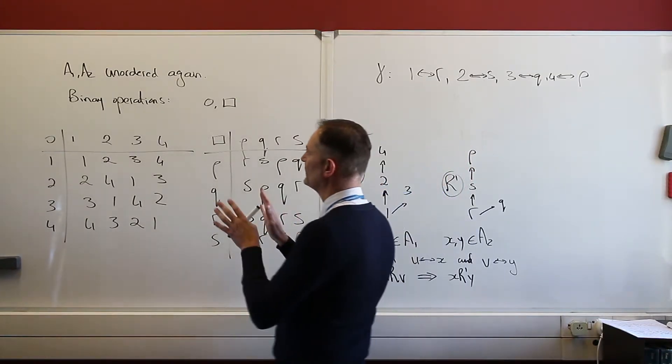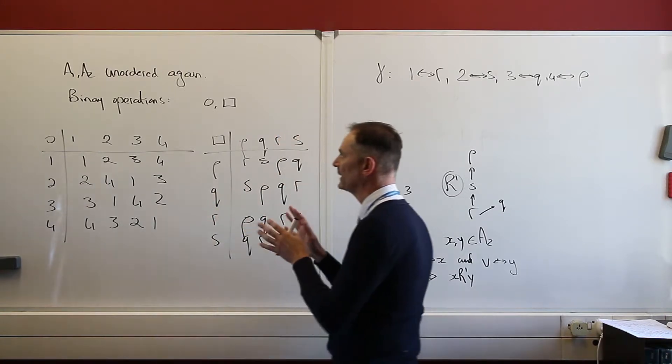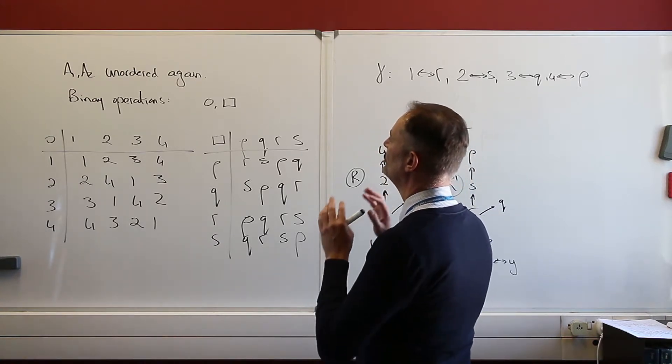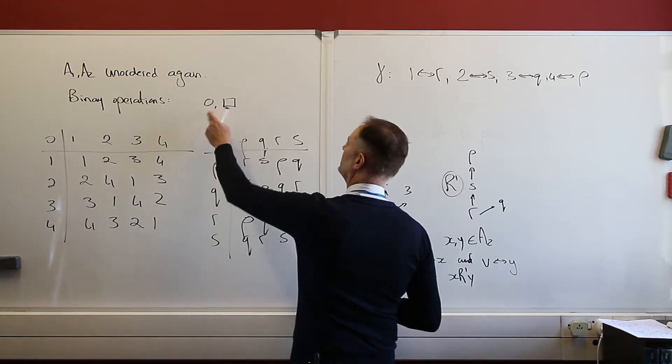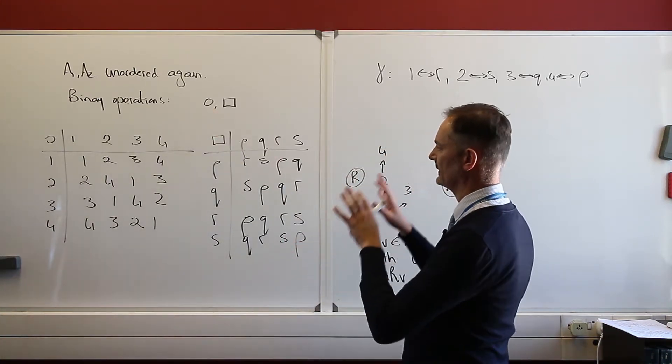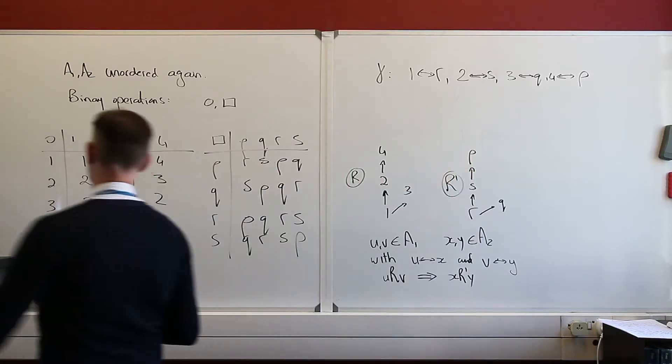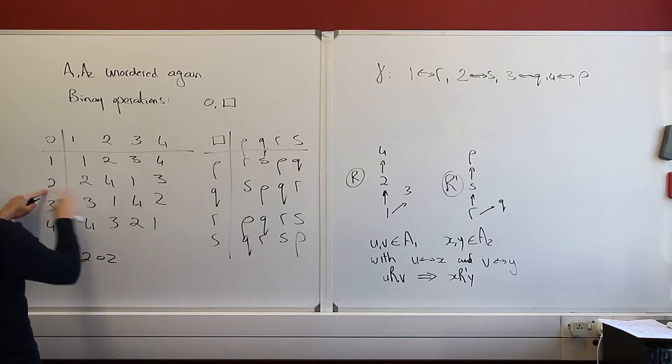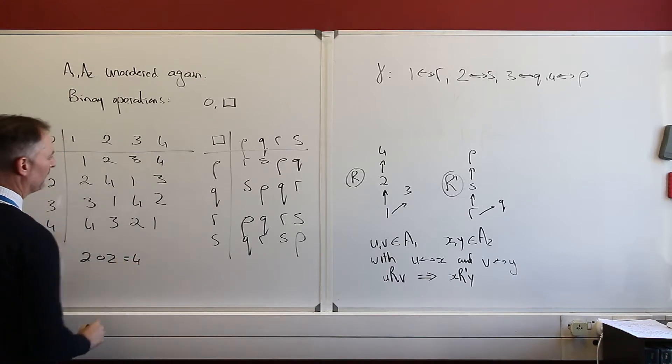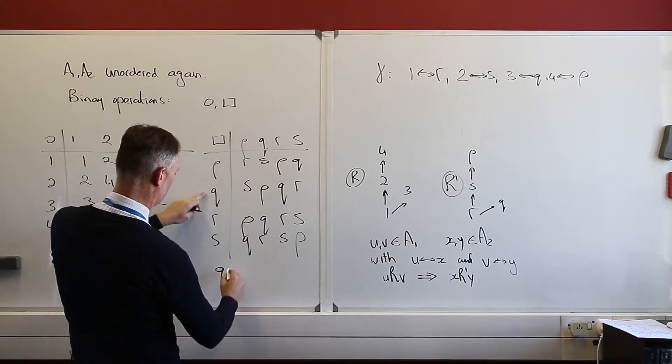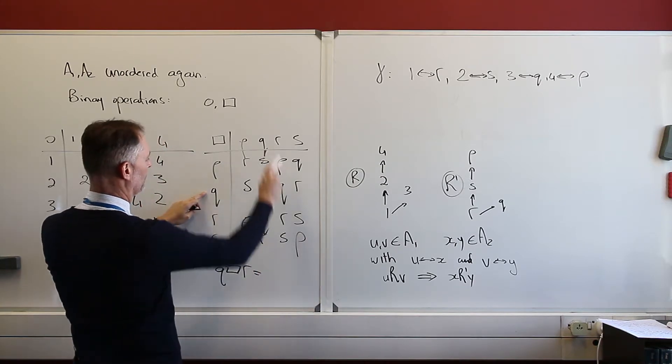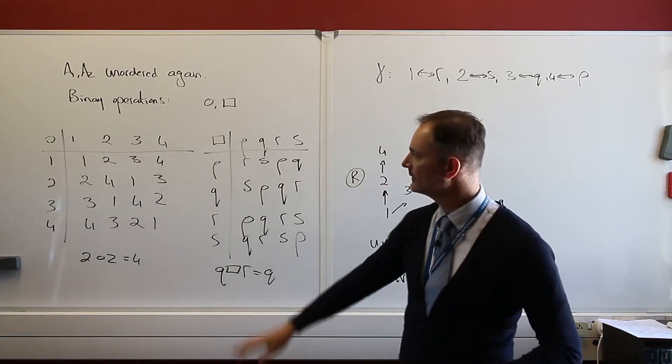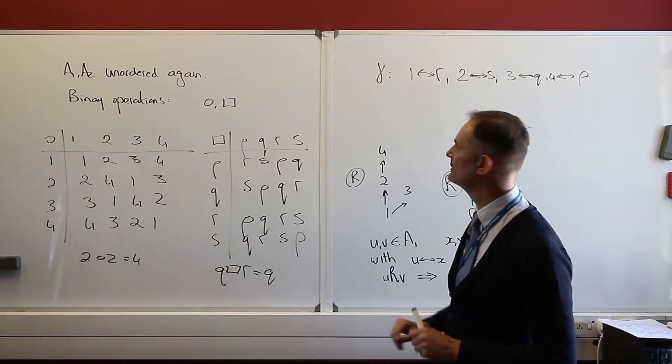So again, I'm starting with my two unordered sets, A1 and A2. Unordered again. Remember, 1, 2, 3, 4, p, q, r, s. And I have these two binary operations on them. These two binary operations. And the way these two binary operations are set up is this table. And how do we read this table? So we would have the following. So 2 with 2, this binary operation with 2 and 2 is going to give me 4. And on this side, say q and r. q and r, that gives me q. And r gives me another q back. I've set up two binary operations. Two binary operations, one for each of my set.